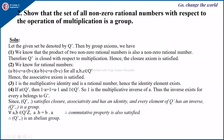Second example: show that the set of all non-zero rational numbers with respect to the operation of multiplication is a group. Here the set of non-zero rational numbers is represented by Q* (or Q minus {0}). By the group axioms, the product of two non-zero rational numbers is also a non-zero rational number, therefore Q* is closed with respect to multiplication, so closure is satisfied.